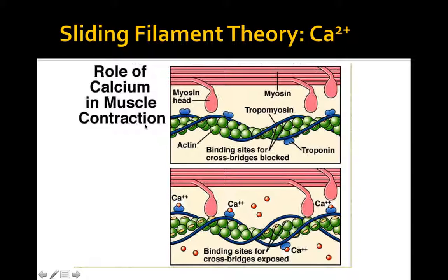Calcium is key for contraction because of its interaction with troponin on the actin filament. Think of troponin as a toll booth—calcium is the toll you pay. Along the actin there are tropomyosin strands covering the active sites. When calcium binds to troponin, the tropomyosin lifts off, uncovering the active sites on the actin. This allows the myosin globular heads to bind and perform the pulling motion causing contraction.